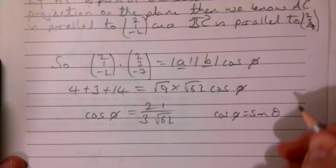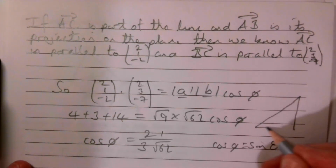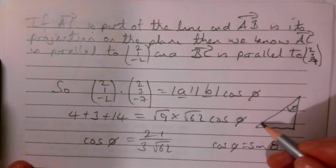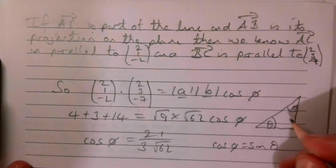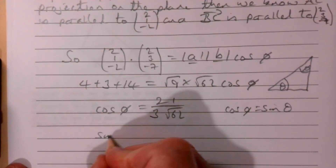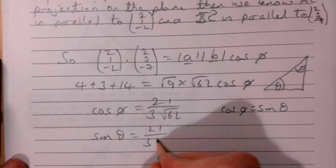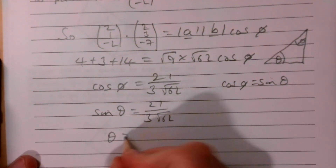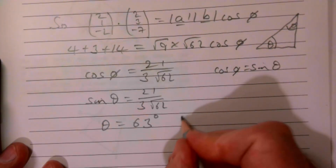We know cos phi equals sine theta because of the triangle relationship we established. So sine theta = 21 / (3√62), and therefore theta = arcsin(21 / (3√62)) ≈ 63 degrees to the nearest degree.